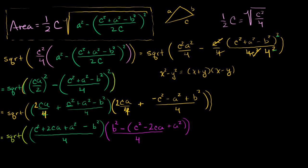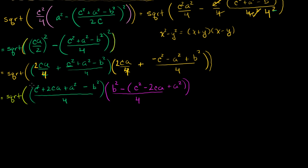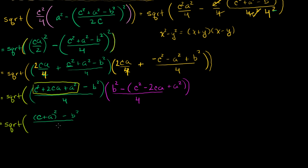The next thing to recognize is that c squared plus 2ca plus a squared is the same thing as c plus a, squared. So this equals the square root of c plus a, squared minus b squared over 4. And this second term: c squared minus 2ca plus a squared is c minus a, squared. So that whole thing simplifies to b squared minus c minus a, squared, all over 4. We're making some headway.